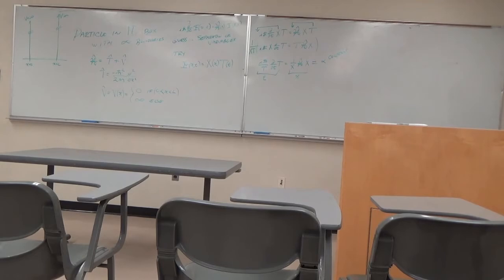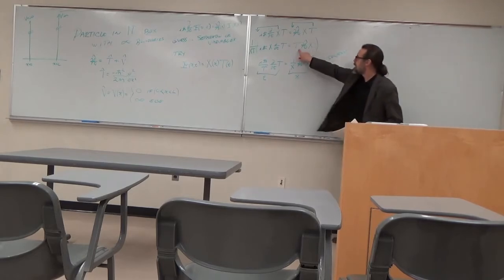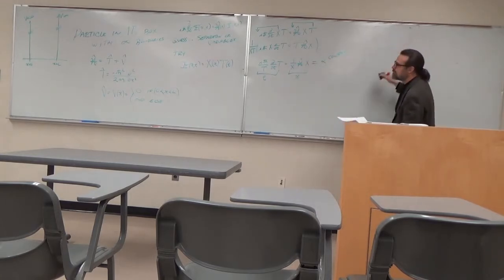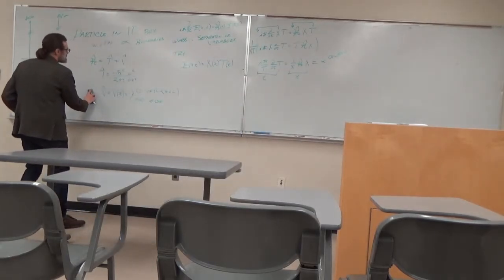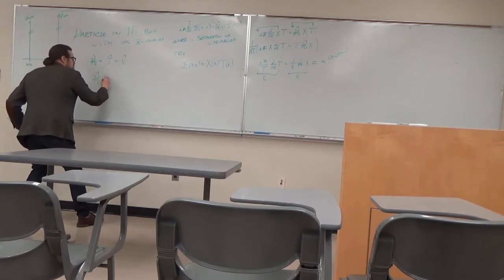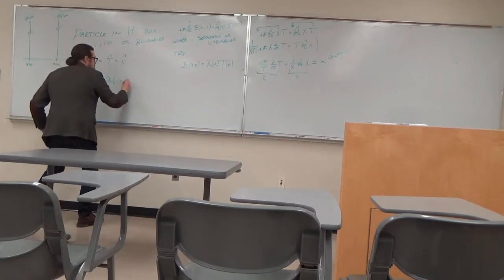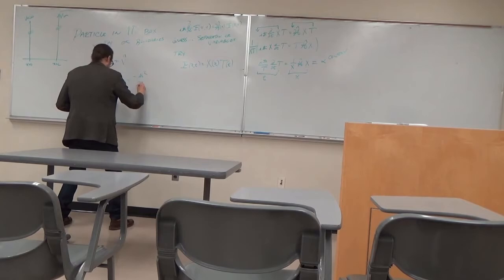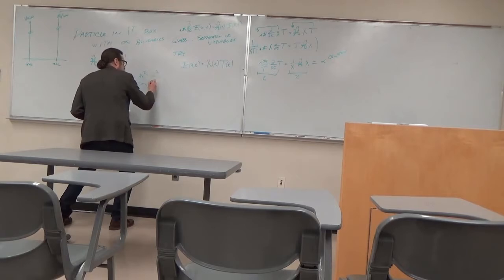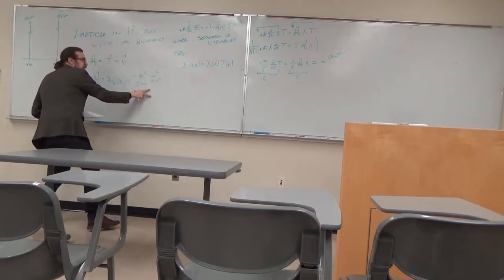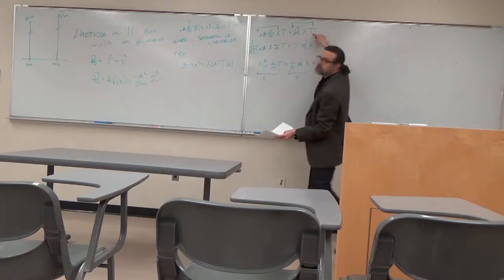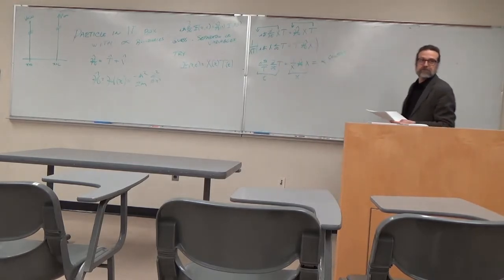Student question: why did you move T before the Hamiltonian operator? Because the Hamiltonian depends only on position. The operator is Ĥ = −ℏ²/(2m) d²/dx². There's nothing in the operator that would interact with the time-dependent part, so that allows me to just pass it through.